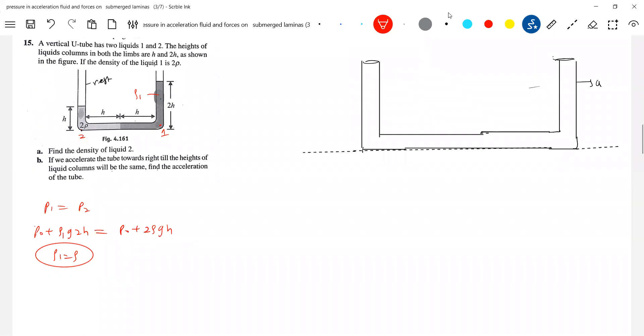Now, if you accelerate the tube towards right, the heights of liquid column will be the same. Find the acceleration of the tube. If you don't accelerate, the lighter one will rise to more height.